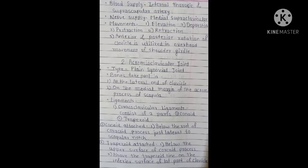The next joint is the acromioclavicular joint. Bones that take part are the lateral end of the clavicle and the medial margin of the acromioclavicular process of the scapula. Ligaments include the coracoclavicular ligament, which consists of two parts: the conoid part and the trapezoid part. The conoid part is attached below the root of the coracoid process, just lateral to the scapular notch.